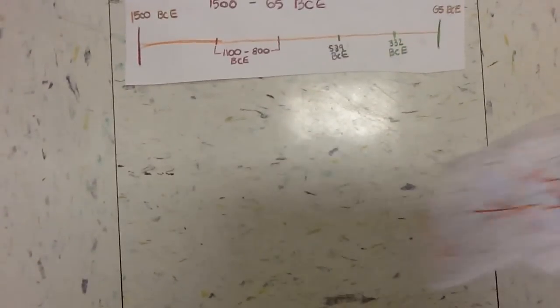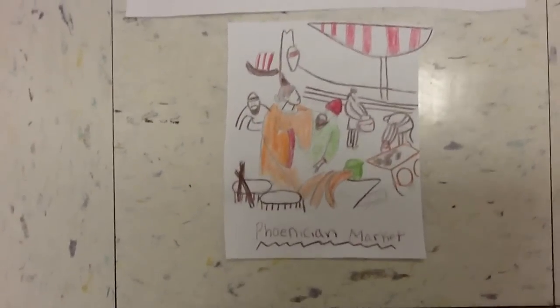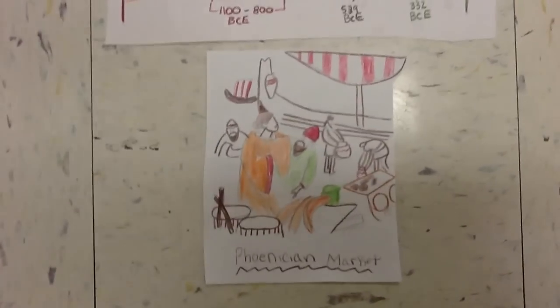In Phoenicia, they had many of their own marketplaces, or as they called them, bazaars. In these bazaars, Phoenicians bought and sold exotic items.